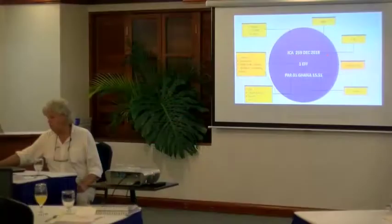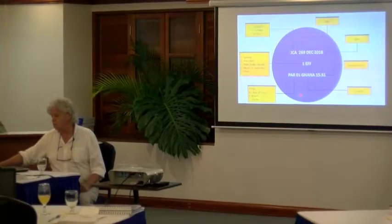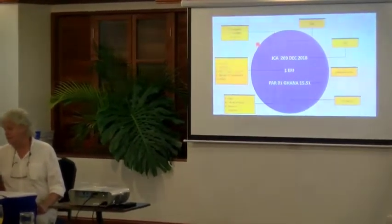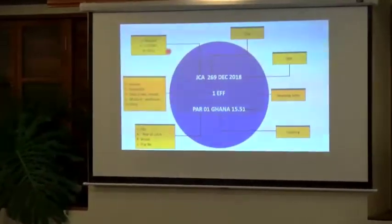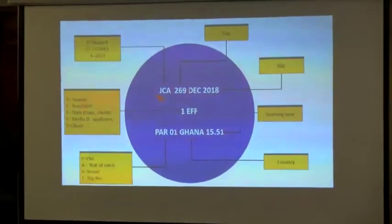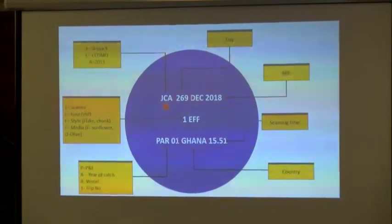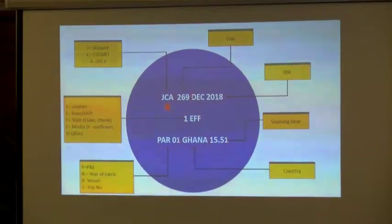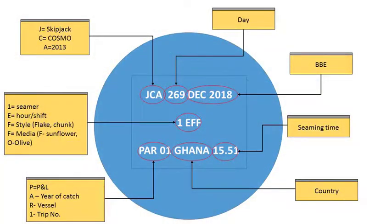As it happens, we have the coding system used by this business operator to identify a whole range of variables. They can identify the species, the processing factory, the year when it was processed, the day of that year — so this would be day 269 of 2013 — the best before end date, and the seamer, in other words the machine which actually closed the can.